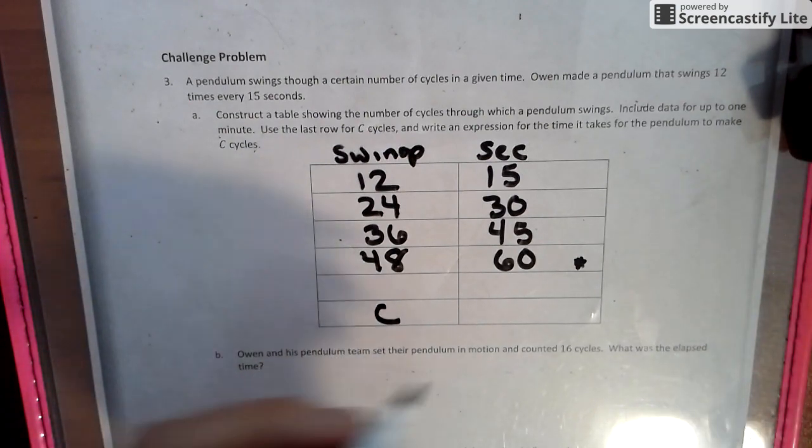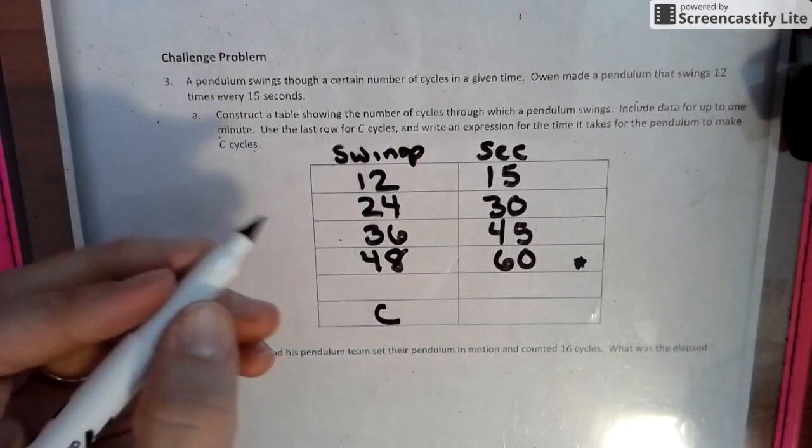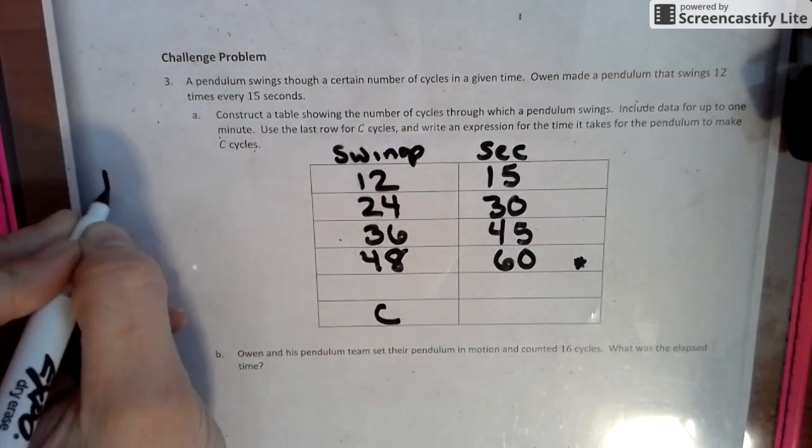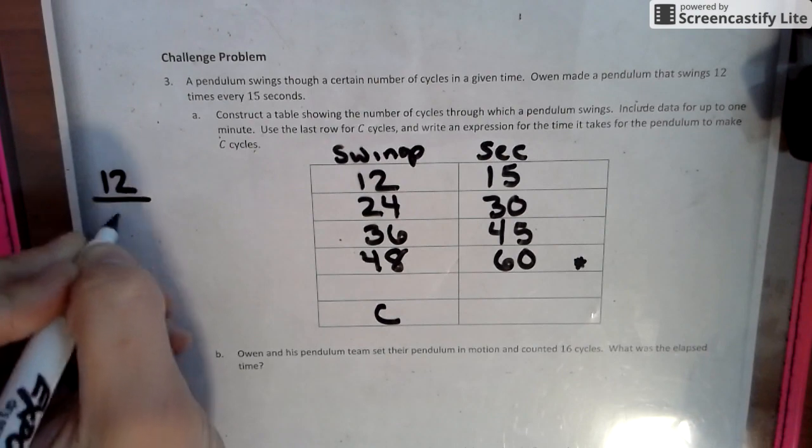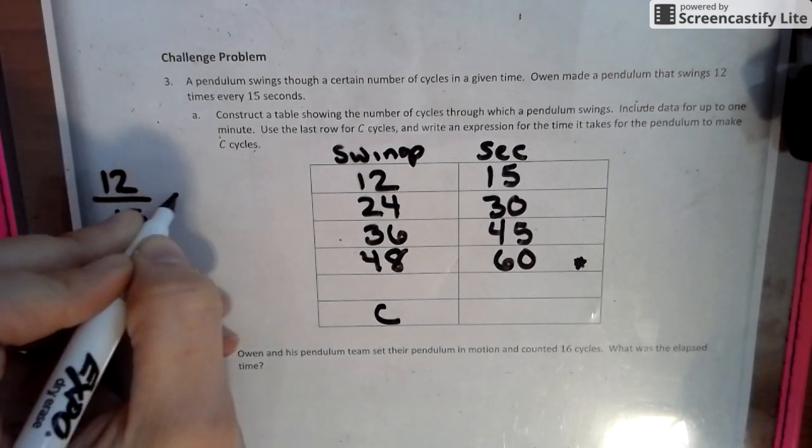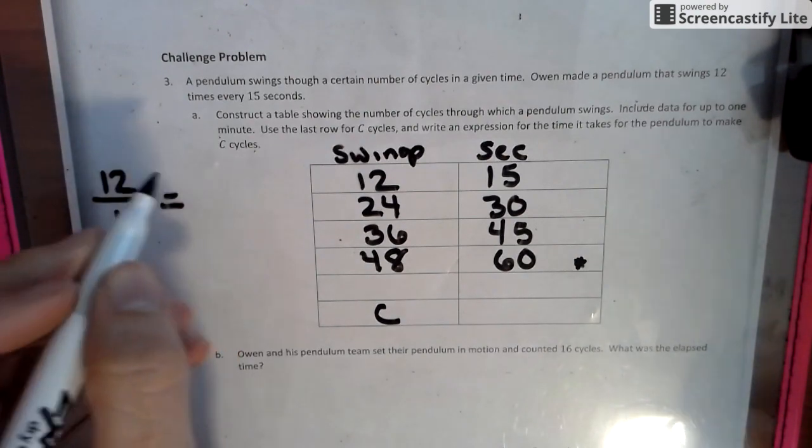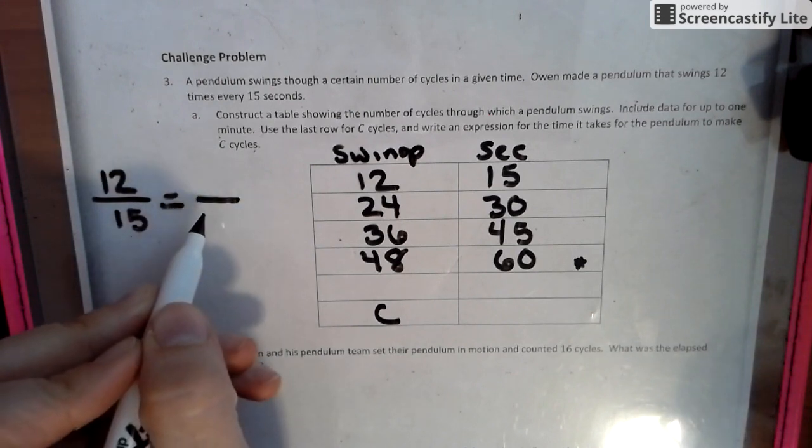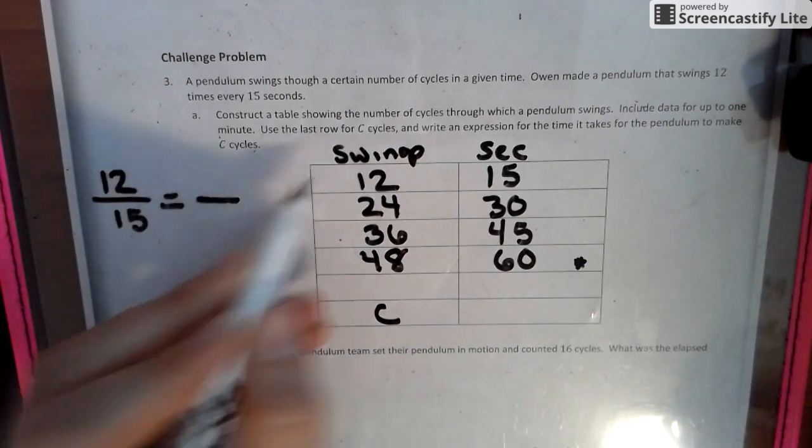So we're going to use a thing called a proportion. Okay. So our original proportion is 12 swings every 15 seconds. And that's going to equal